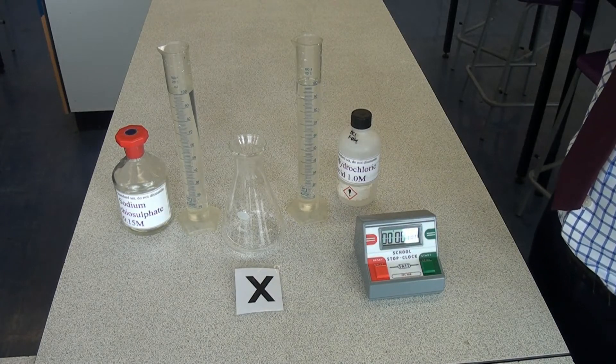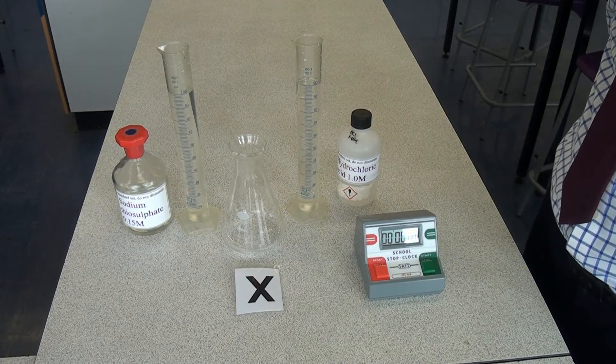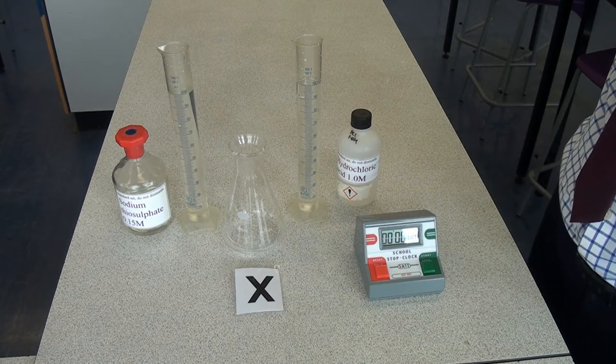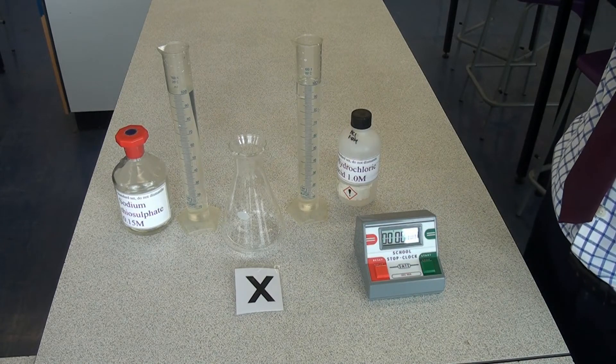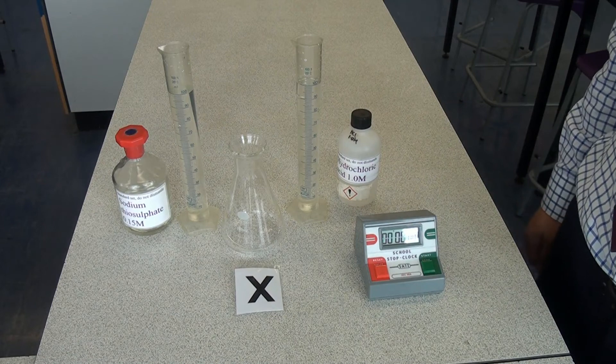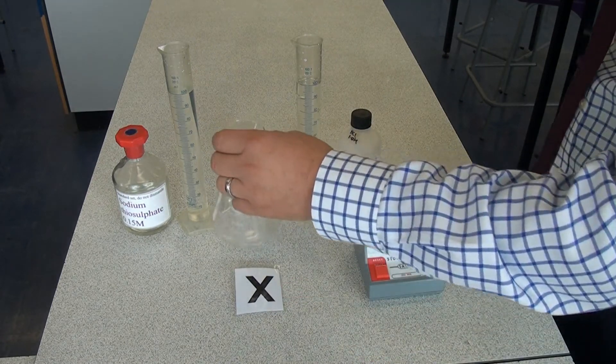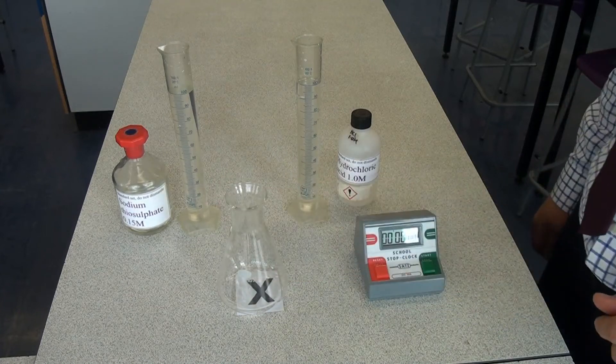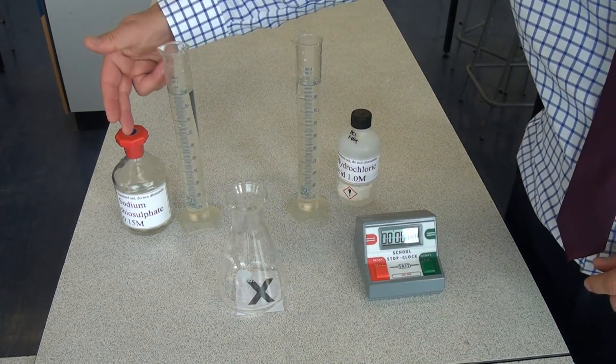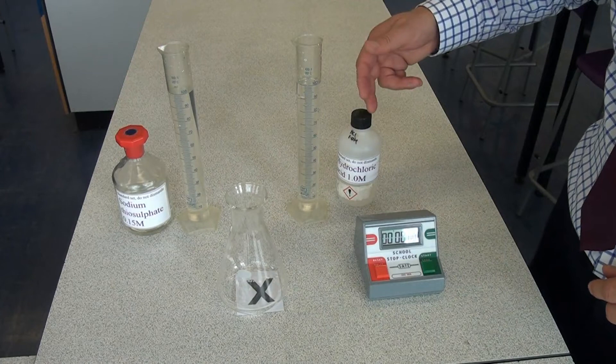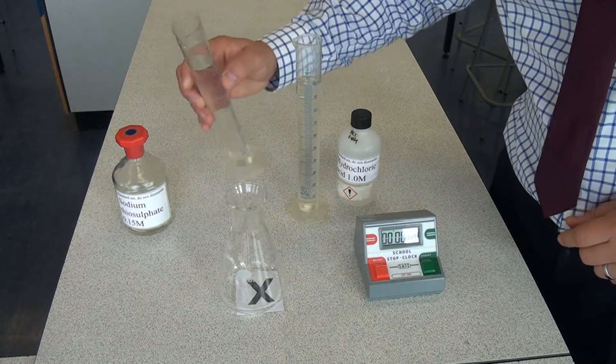We've already mentioned that sometimes a solid is made in a chemical reaction. So in that situation, how can we measure the rate of reaction where there's no gas being produced? Well, I've got here a cross marked on a piece of paper and I'm going to stand the flask on top of it. I'm using sodium thiosulfate and hydrochloric acid. So I'm going to pour the first reactant in.